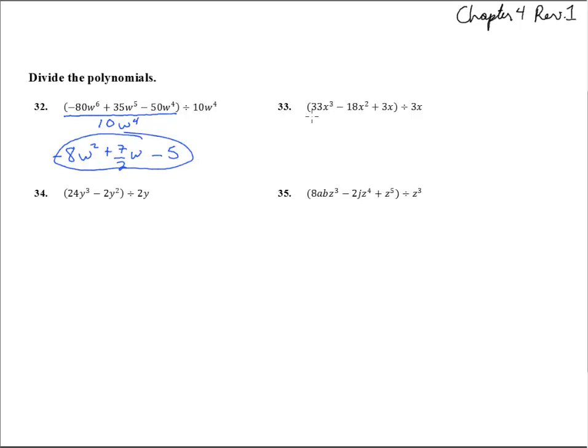Here we go. Number 33, we divide this whole thing by 3x. We divide 33x cubed and get 11x squared, subtracting the exponents - there's an exponent of 1 there. Minus 18 divided by 3 is 6. X squared over x leaves an x there, and then 3x over 3x is 1.